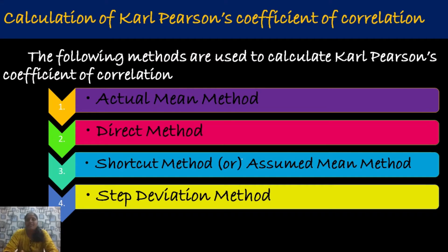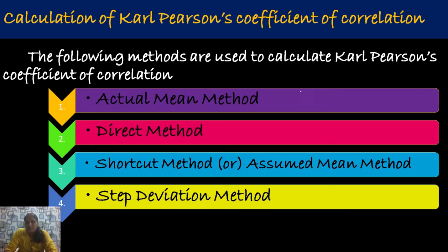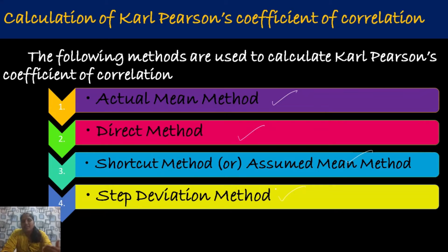We have several methods available for calculation of Pearson's coefficient of correlation. The first one is the actual mean method, the second one is the direct method, the third one is the shortcut method or assumed mean method, and the last one is the step deviation method. Based on the given data, we have to prefer either the first, second, third, or fourth method.